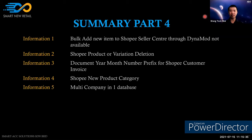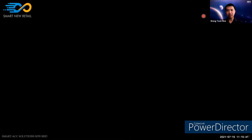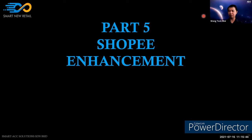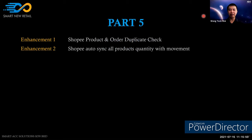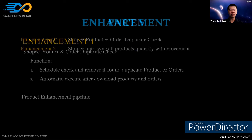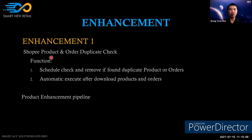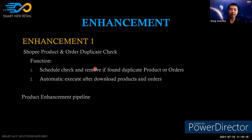Part 5 — Future Enhancements. First enhancement: Shopee product and order duplicate check. In response to earlier questions about preventing duplicates, a scheduled automatic checking and removal function for duplicate products or orders is being developed. It will run on a schedule and automatically delete duplicates when found.